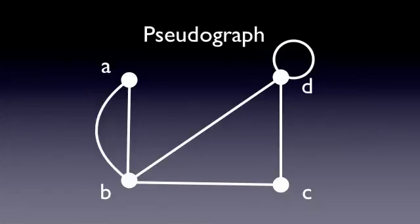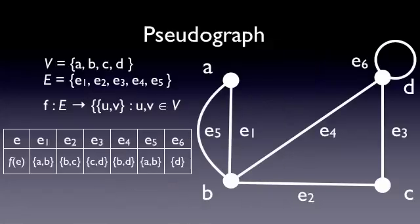Let's take a look at the math again. This actually looks pretty similar to a multigraph, but one important difference is that the edge E6 only has a single vertex. Remember earlier, when we were looking at a multigraph, we noticed in the function that U does not equal V.